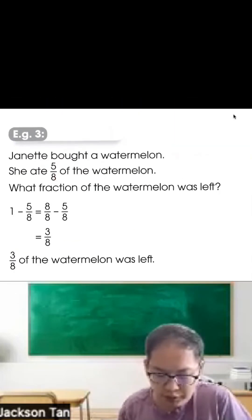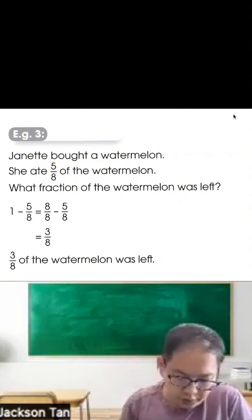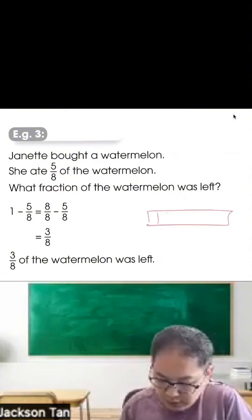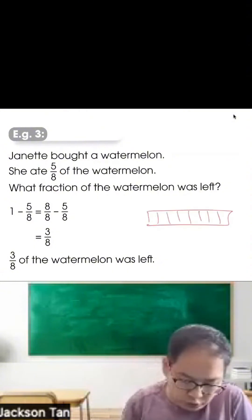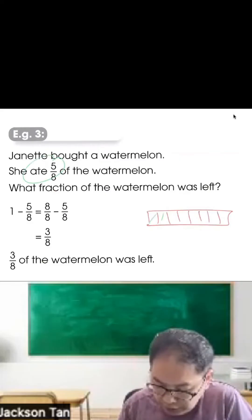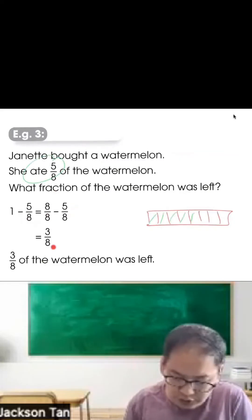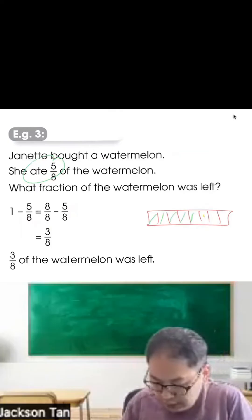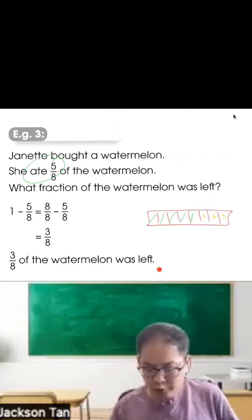Here's the word problem. Jeanette bought a watermelon. She ate 5 out of 8 of the watermelon. What fraction of the watermelon was left? So 1 whole watermelon cut into 8 equal parts. She ate 5 out of 8. So 1 whole minus 5. So 8 out of 8 minus 5 out of 8 is 3 out of 8. So 3 out of 8 of the watermelon was left.